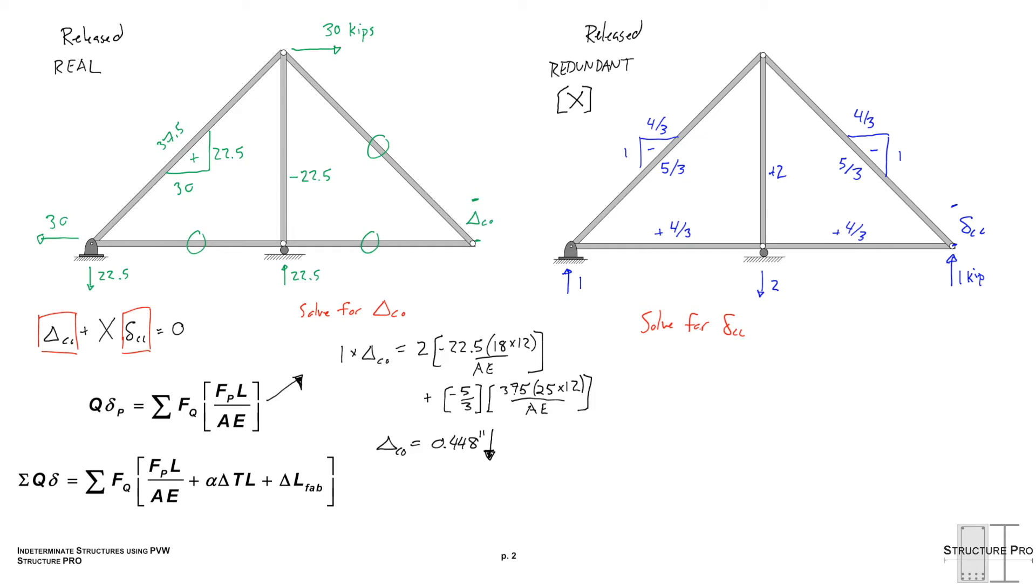Next let's solve for the delta Cc. And here's where things get a little bit interesting. So for our principle of virtual work equation we're going to use the Q system as the same as our P system. So this release redundant system is our Q system and our P system. So we can change the equation if we like to Q delta P equals the sum of all the FQ squared L over AE. So there's no longer an FP and FQ they're both from the same system here. So 1 times delta Cc and this time we have to take into account all the members. So 5 over 3 squared times 25 times 12 over AE times 2 and that times 2 is there because the 5 over 3 is both of these diagonal outside members. So we just times it by 2. And here yes I'm just realizing that this 18 should have been a 15 so switching that there and in this calculation for delta Cc that's 2 squared times 15 times 12 over AE.